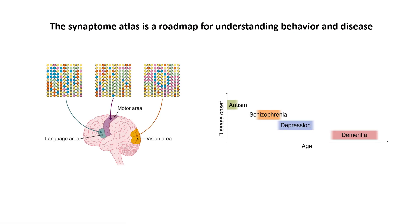The synaptome atlas is a roadmap for understanding behaviour and disease. We can understand how different parts of the brain work, and understand why different diseases start at different ages. Autism has its onset in young children, schizophrenia in young adults, depression in middle age, and dementia in old age. All of these disorders involve synapses.